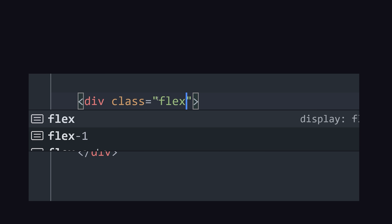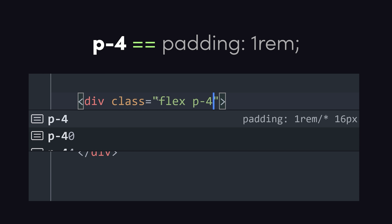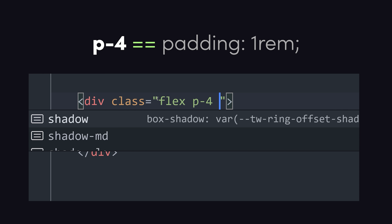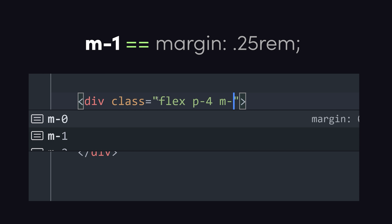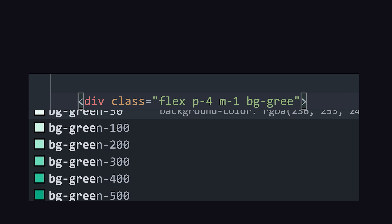you combine utility classes like flex to make it a flexbox, p to give it padding, m for margin, and hundreds of others to control things like color, shadows, and so on.